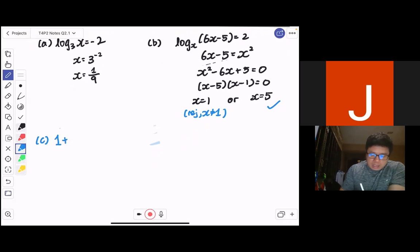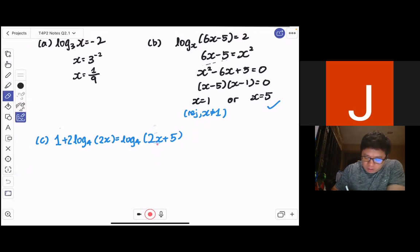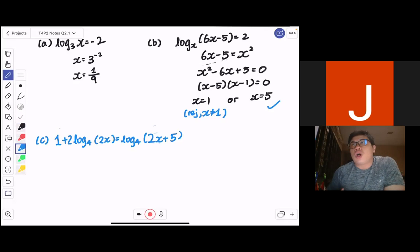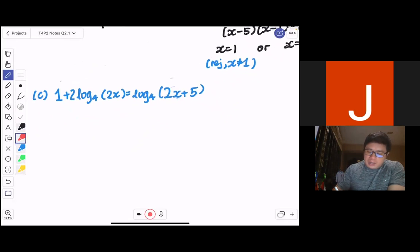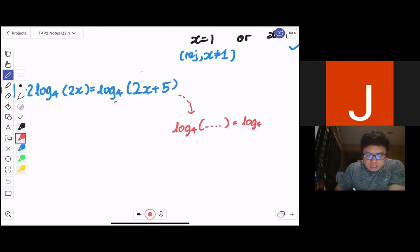So let's look at (c) next. We have 1 + 2log₄(2x) = log₄(2x + 5). Now, one of the methods that I told you earlier was that when we solve logarithmic functions, just like how we solve surds, we try to pack until where 1 surd equals to 1 surd, we can square both sides. So log and surd is also the same. We try to pack. We pack until we have log equals to log, and we can solve the log.